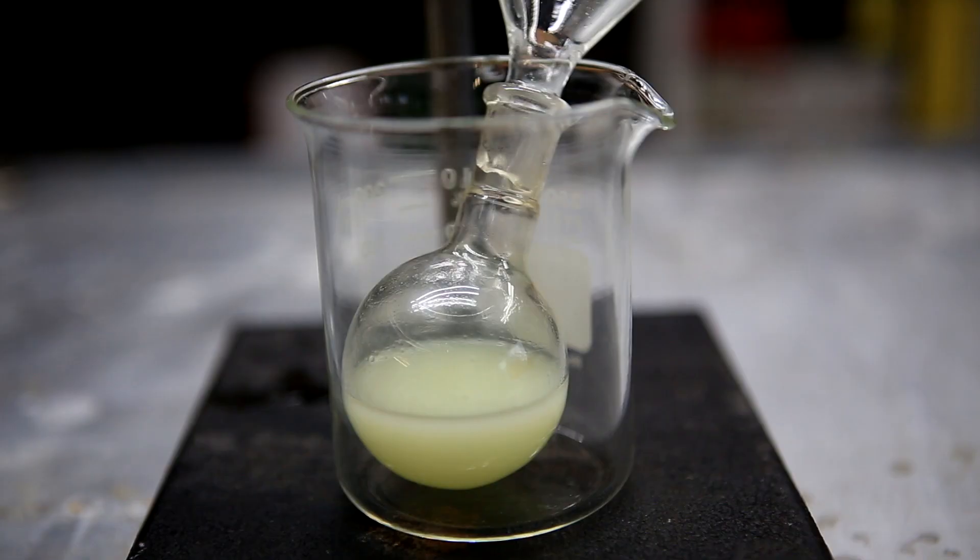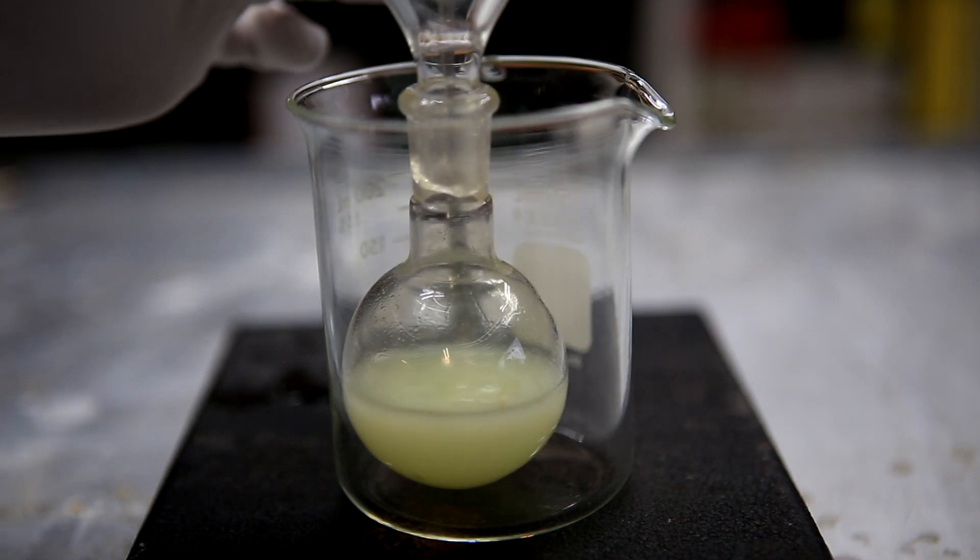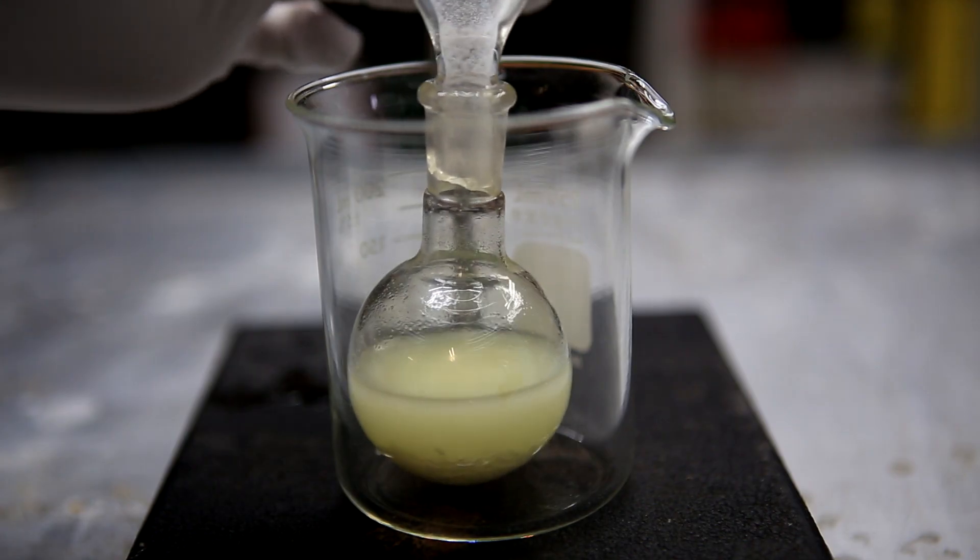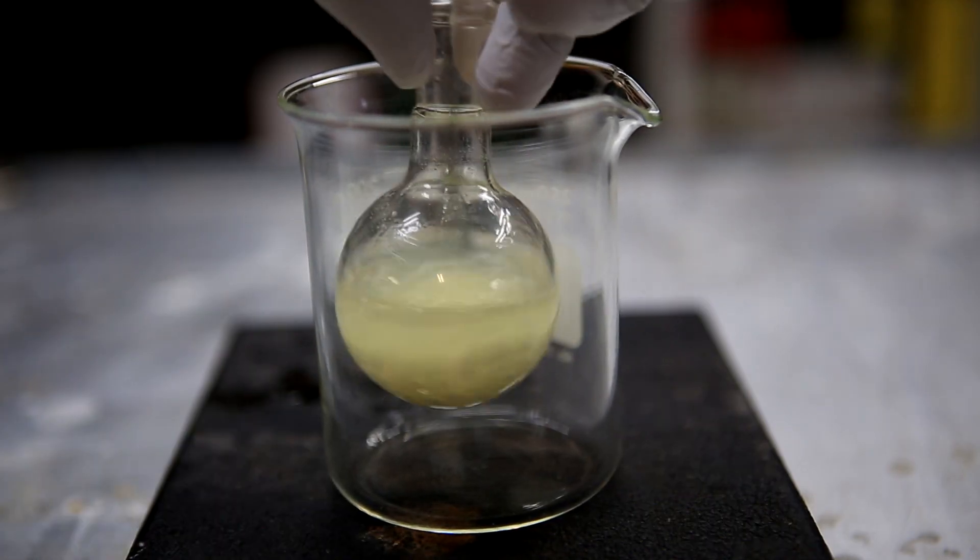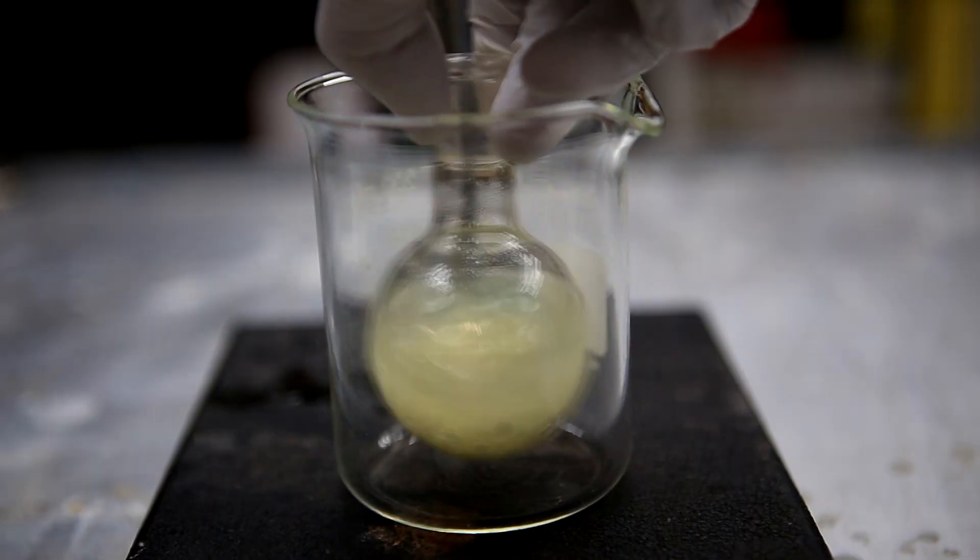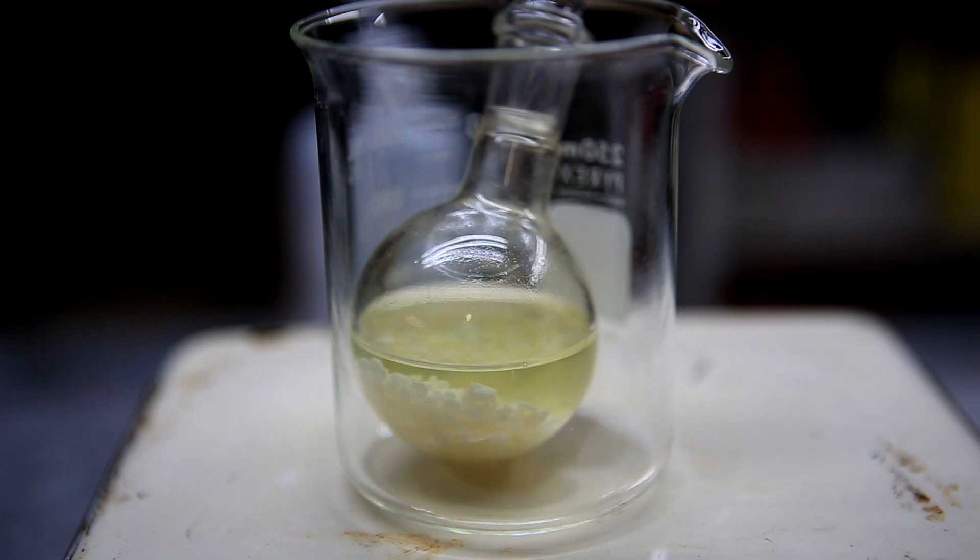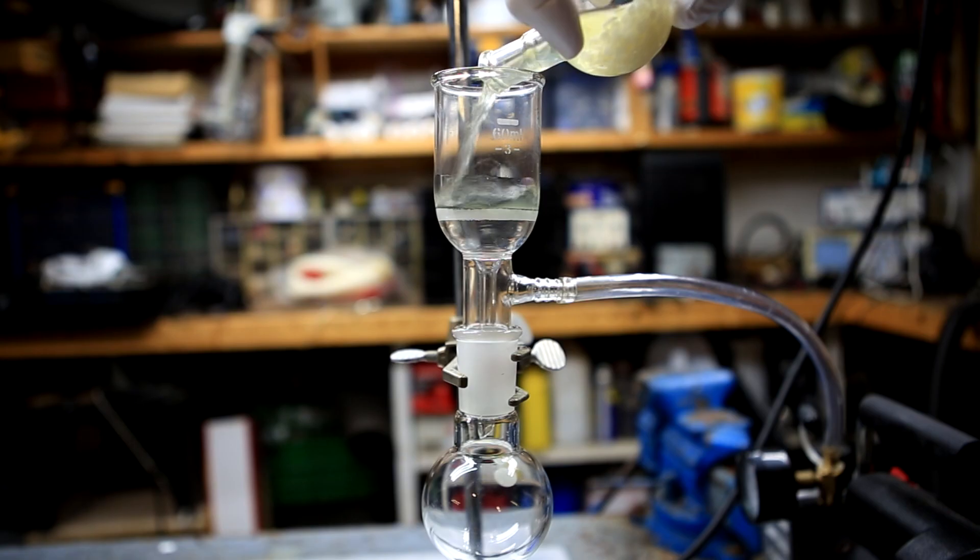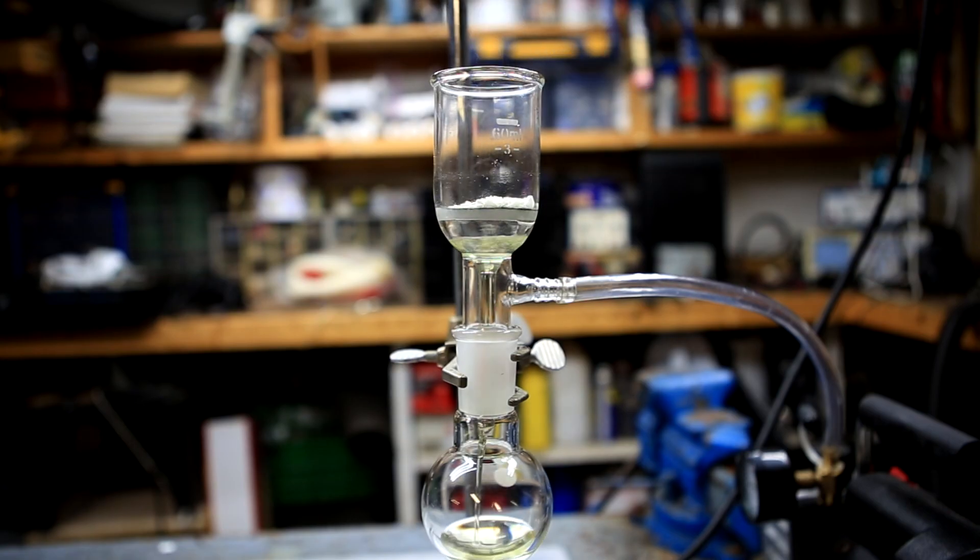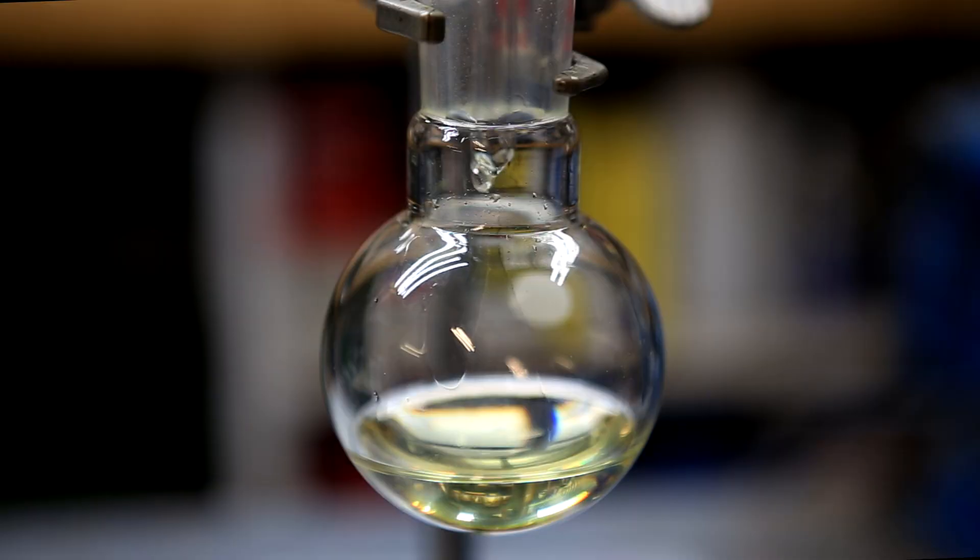To get rid of any remaining water in the nitrobenzene we do this by adding calcium chloride. The calcium chloride is added, the round bottom is stirred, and it's allowed to stand until the solution becomes completely clear. The calcium chloride is then filtered off from the nitrobenzene and we're left with a nice crystal clear yellow liquid.